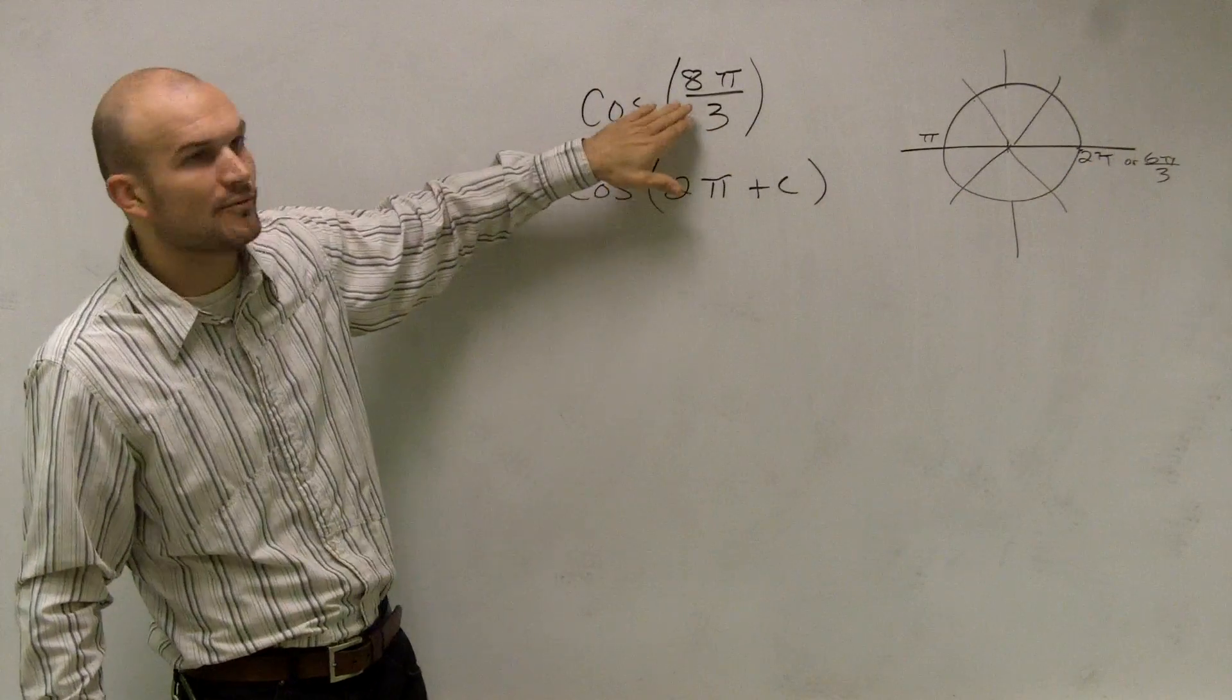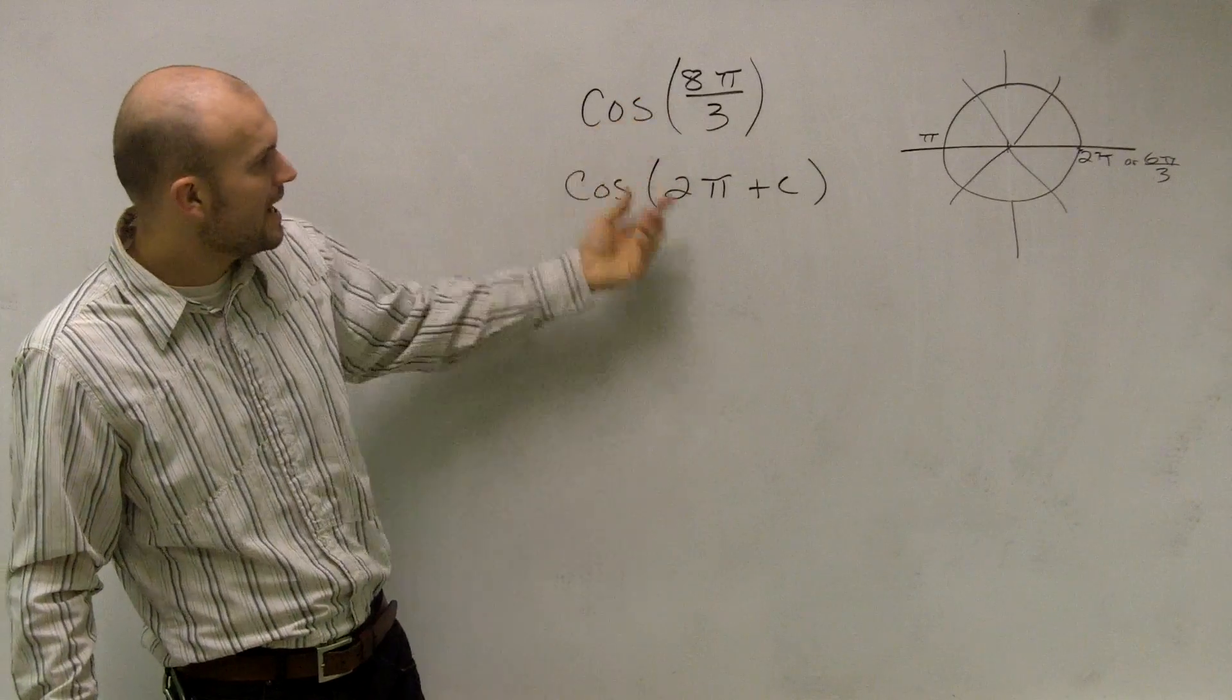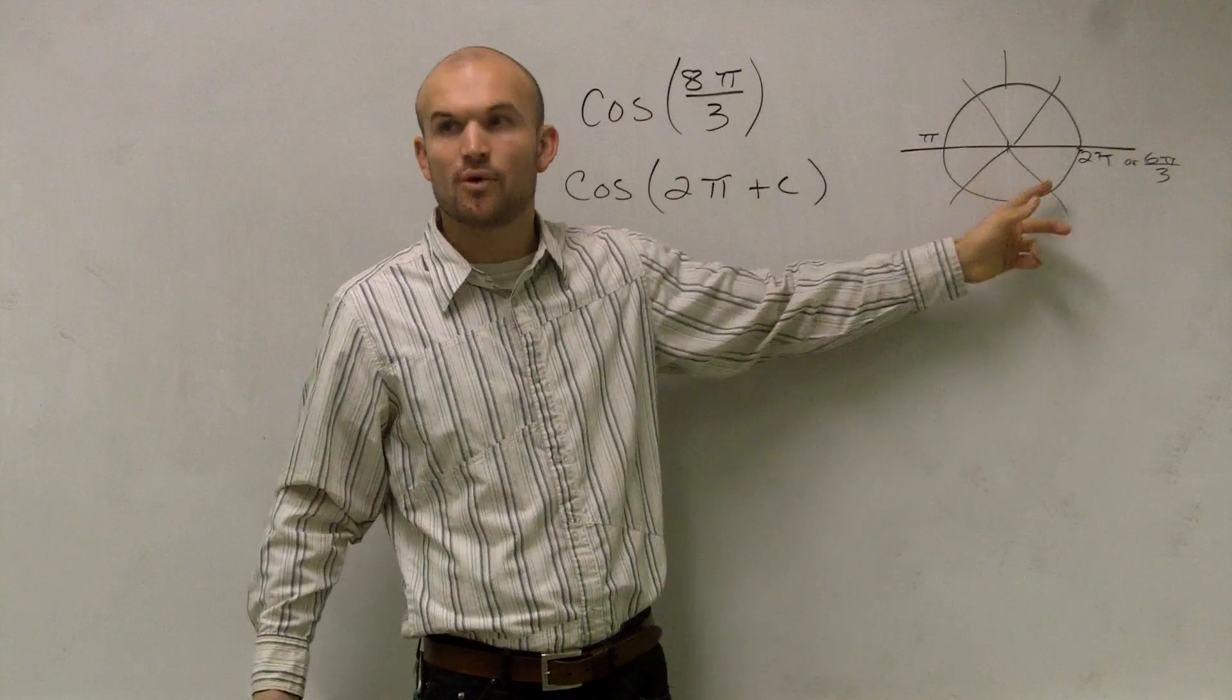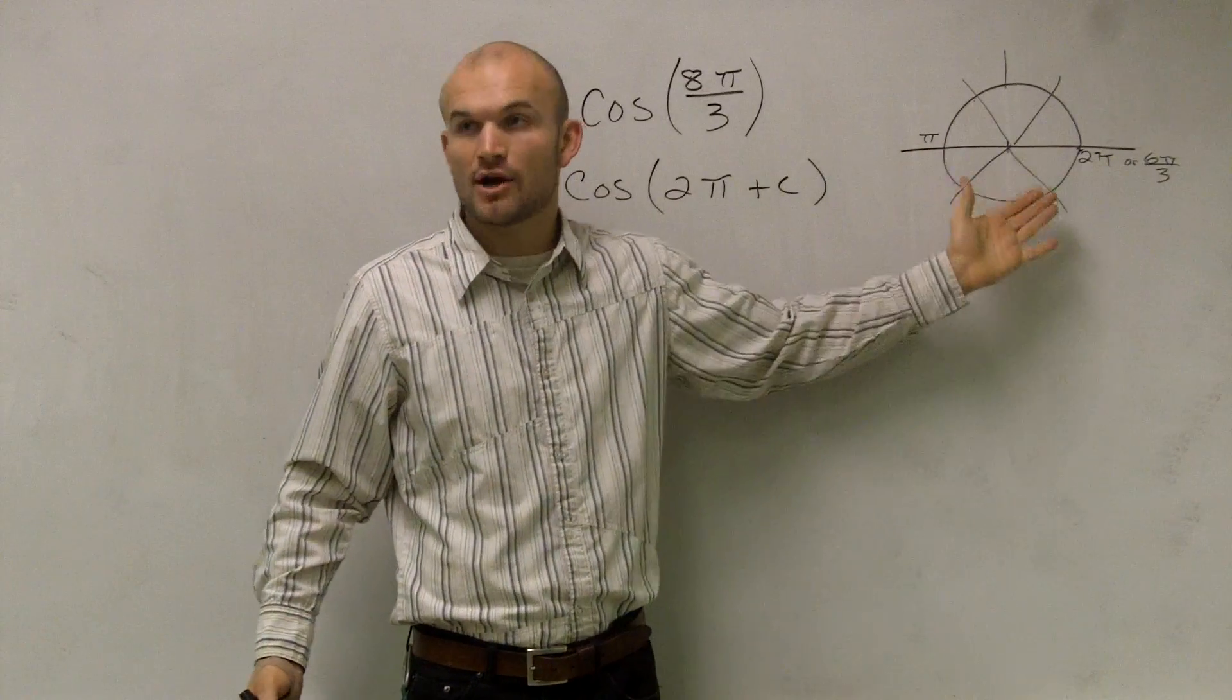So what I can do is, I want to say, well, can I write this as a period? So if I know that 2π is just going to take me to the exact same point, I can kind of disregard it.